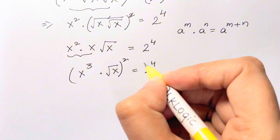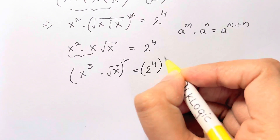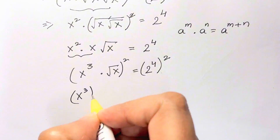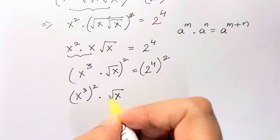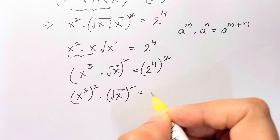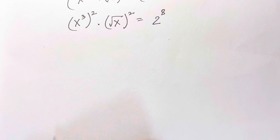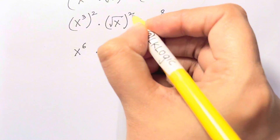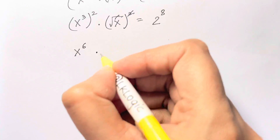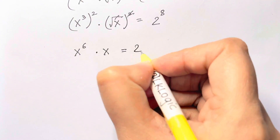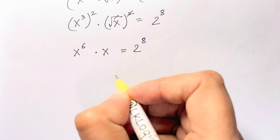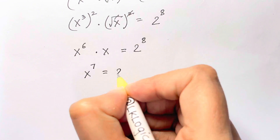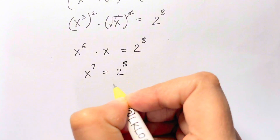Now squaring both sides again, we get x cubed whole square times root x whole square equals 2 to the power of 8. This gives x to the power of 6 times x (since root squared cancels), so adding the powers we have x to the 7 equals 2 to the 8.